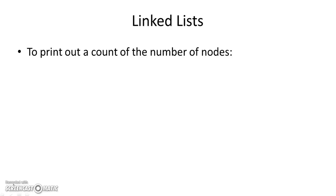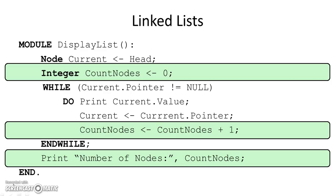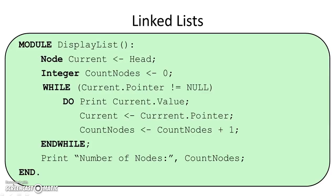If we also want to print a count of nodes, we add a counter variable called count_nodes starting at zero. Each time around the loop, while current pointer is not null, we increment count_nodes by one. After the loop, we print out count_nodes. This pseudocode gives us a rough design of how these modules will look before we implement them in Python.